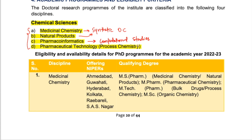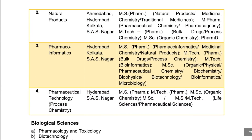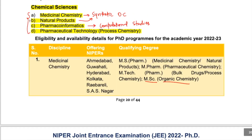For the eligibility criteria: medicinal chemistry requires MSc in organic chemistry — a specialization in organic chemistry is clearly required. Natural products also requires MSc in organic chemistry. For pharmacoinformatics, MSc in either organic chemistry or physical chemistry is accepted. Pharmaceutical technology or process chemistry also requires MSc in organic chemistry. So if you have MSc in organic chemistry, you are eligible for all four subjects.